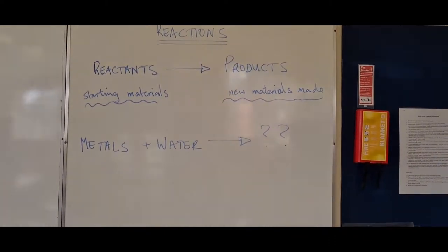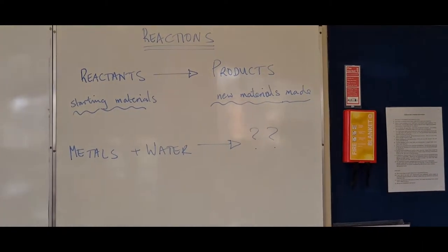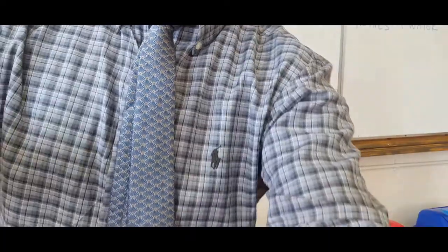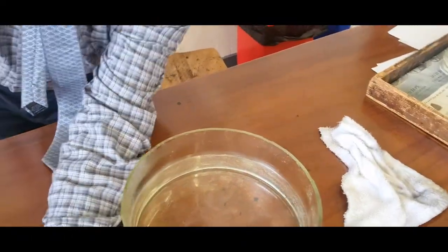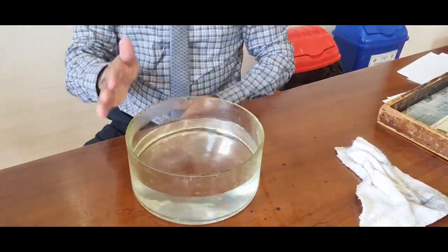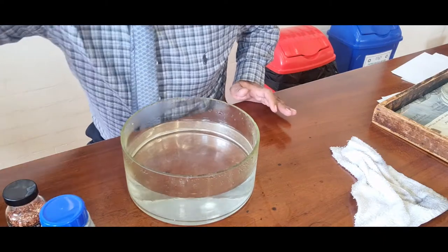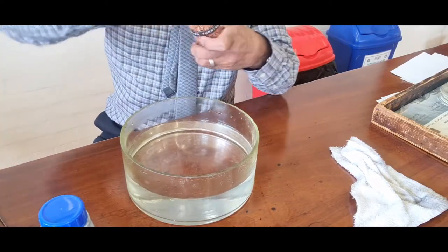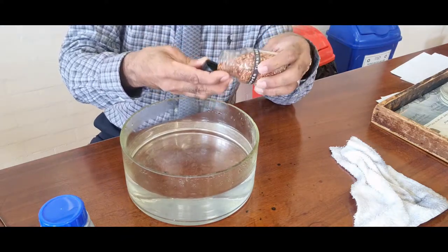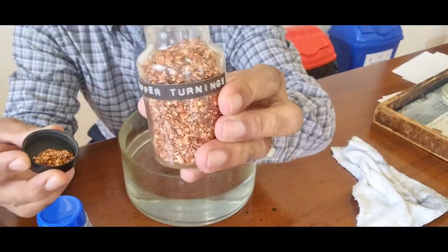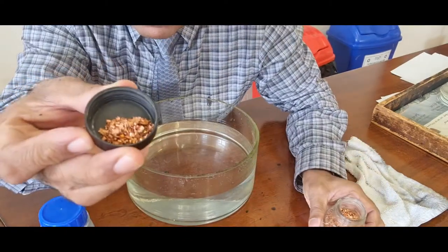Today we're going to look at how metals react with water. I've got a trough of water here and various metals. The first one is copper — I've got some copper turnings, teeny tiny pieces of copper, and I can drop them in.